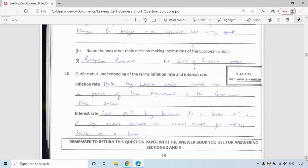Question 10 is from Unit 6. Outline your understanding of the terms inflation rate and interest rate. Inflation rate, this is the rate by which prices increase over a period of time. We use a consumer price index to measure this. The measurement is the consumer price index. And interest rate is the cost paid by the borrower to a lender as a percentage of amount borrowed or amount earned for money saved in a bank. So it can be either on borrowings or on savings. So there are the answers to 2017 short questions for Leaving Cert Business.